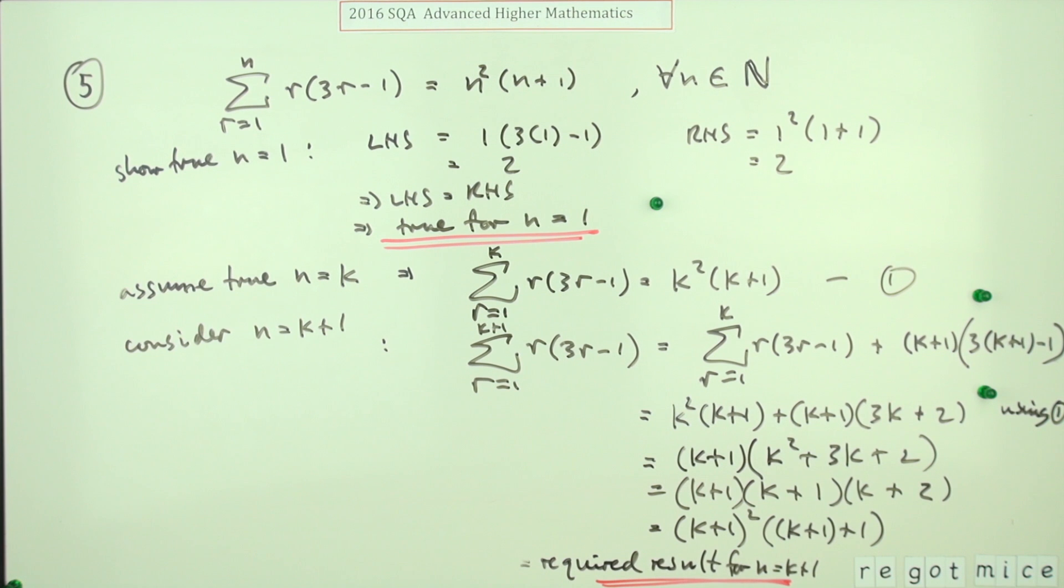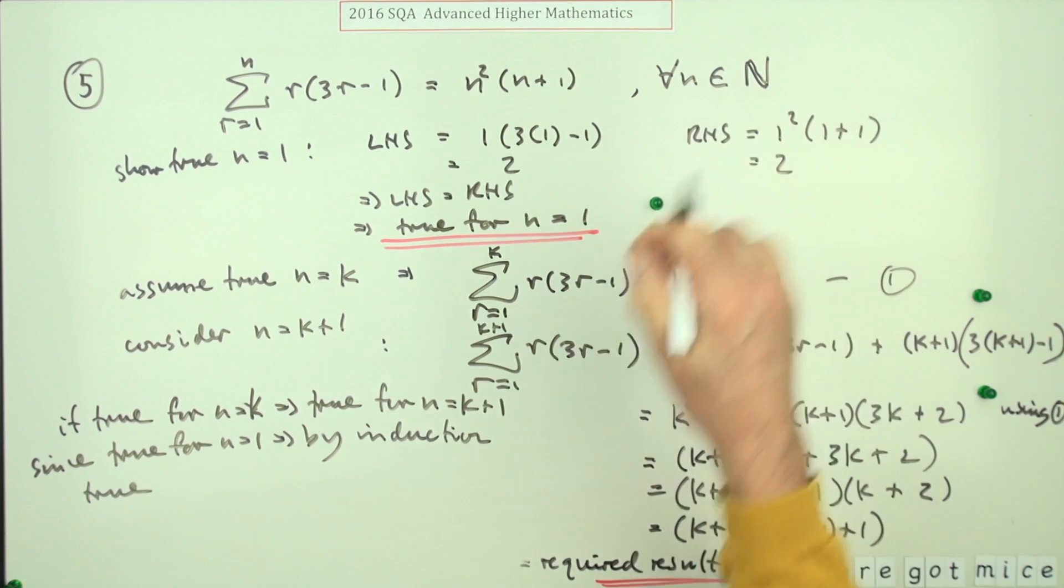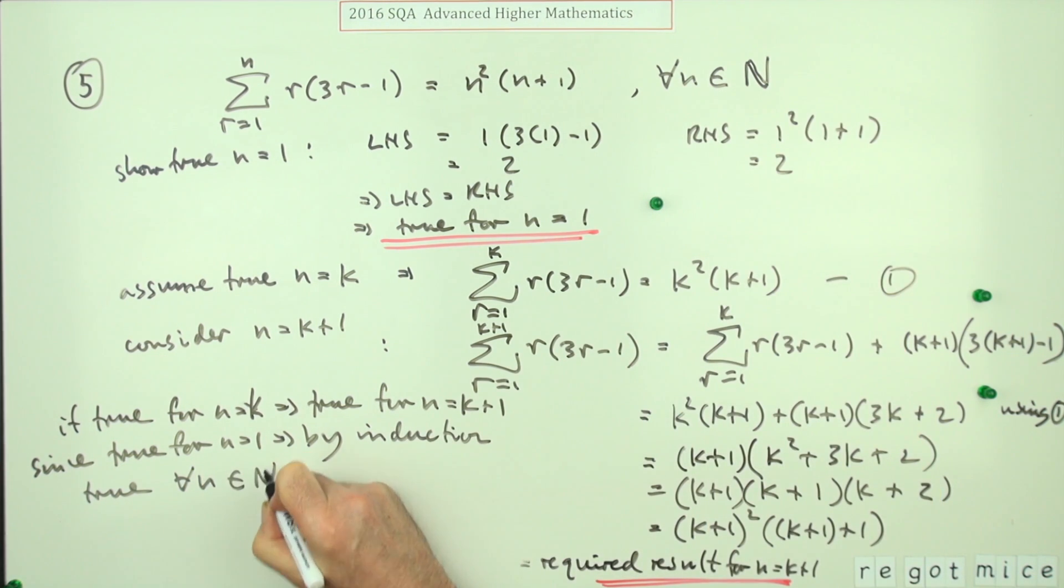I've still not got the final mark until I make my final statement. So what this bit proved was if it were true for n equals k, then it's certainly true for k+1. So you can put that down: 'if true for n equals k, that means it is true for n equals k+1.' And then since it was true at the start at n equals one, that means by induction it's going to be true. Then you can just use your shorthand: true for all n out of the natural numbers. Then you get your last mark.